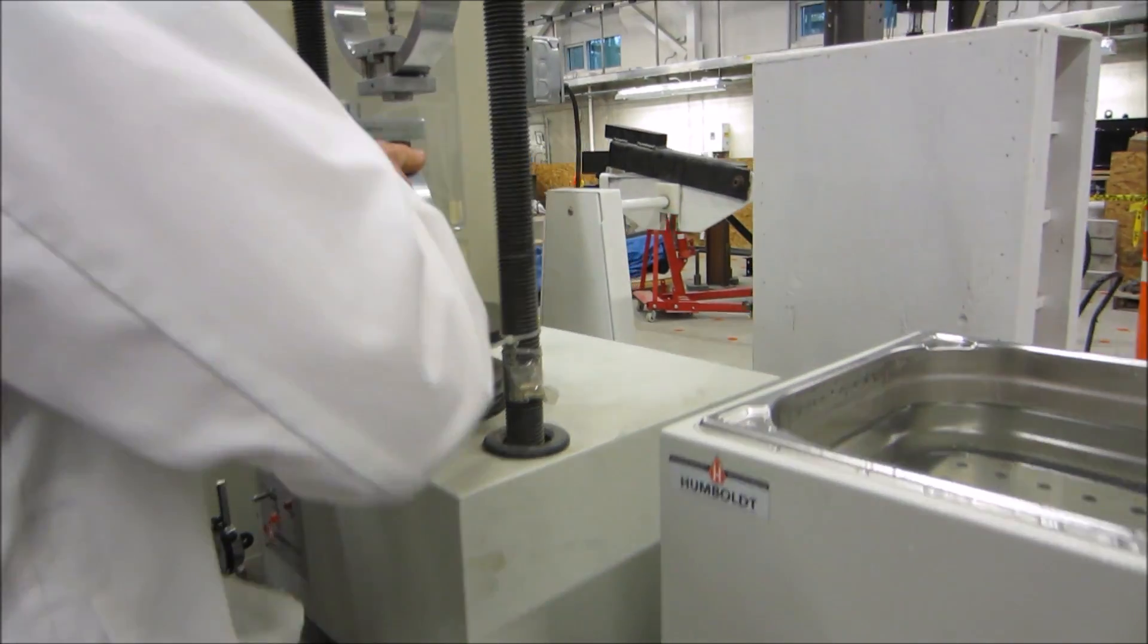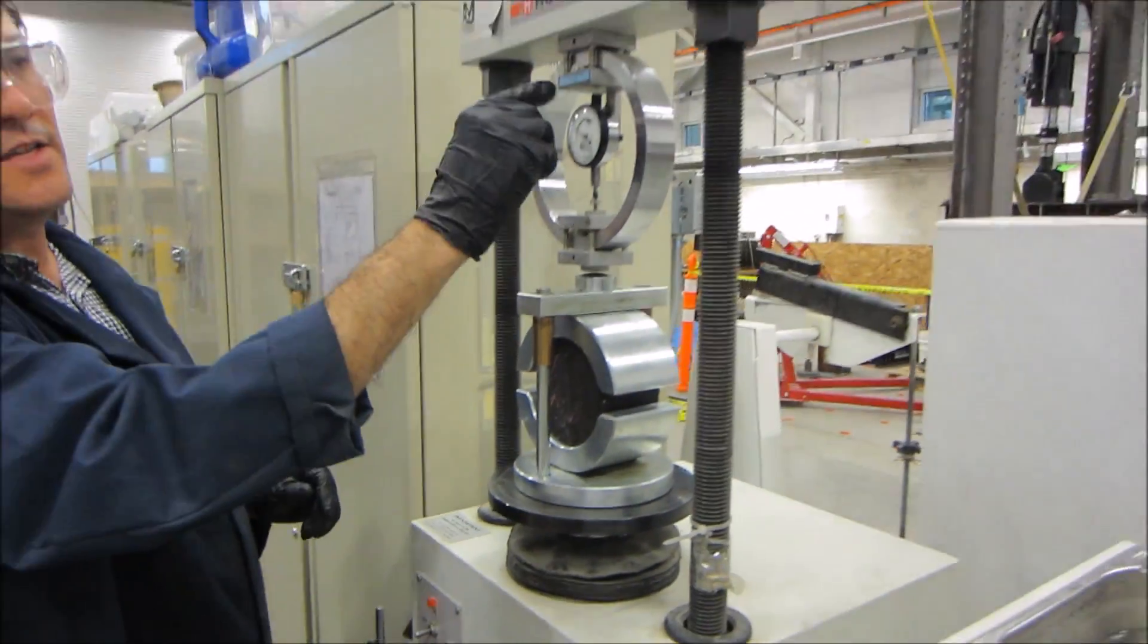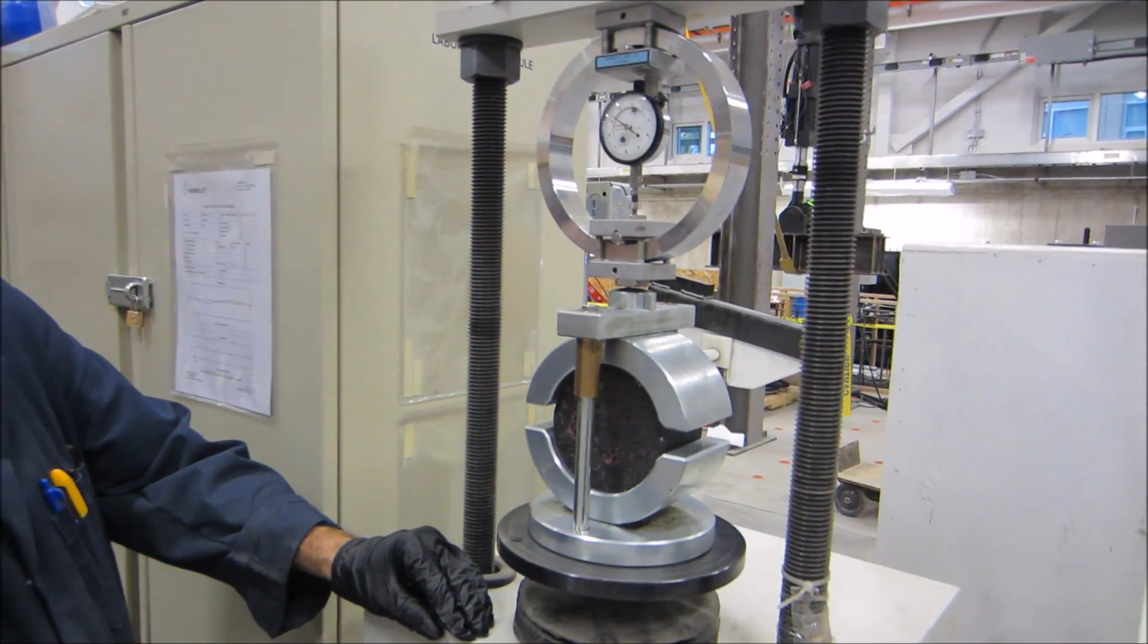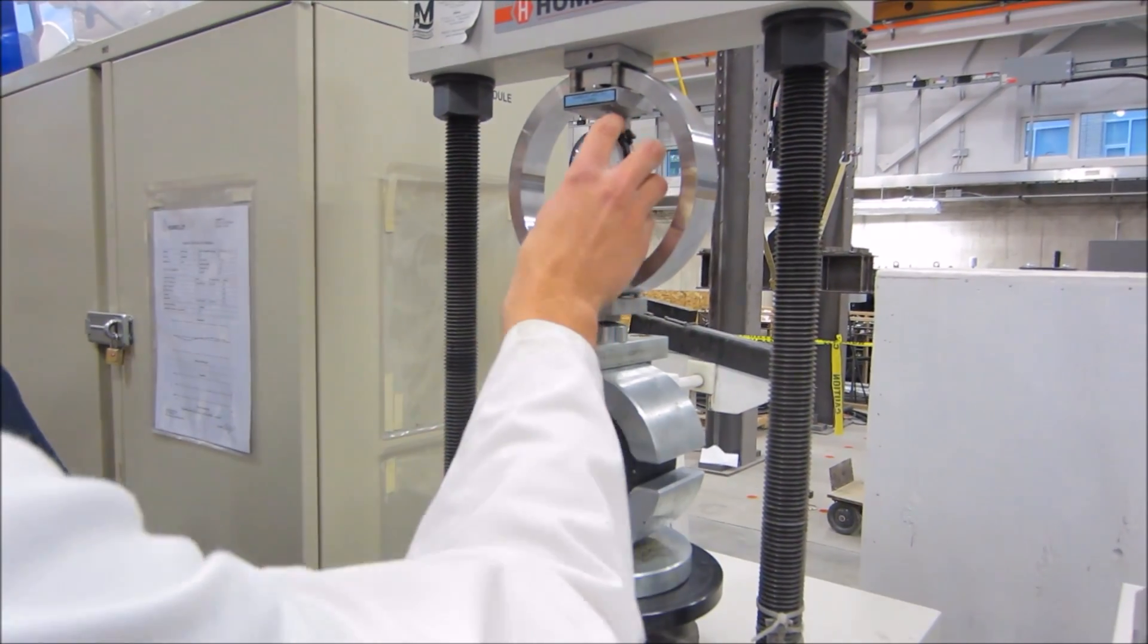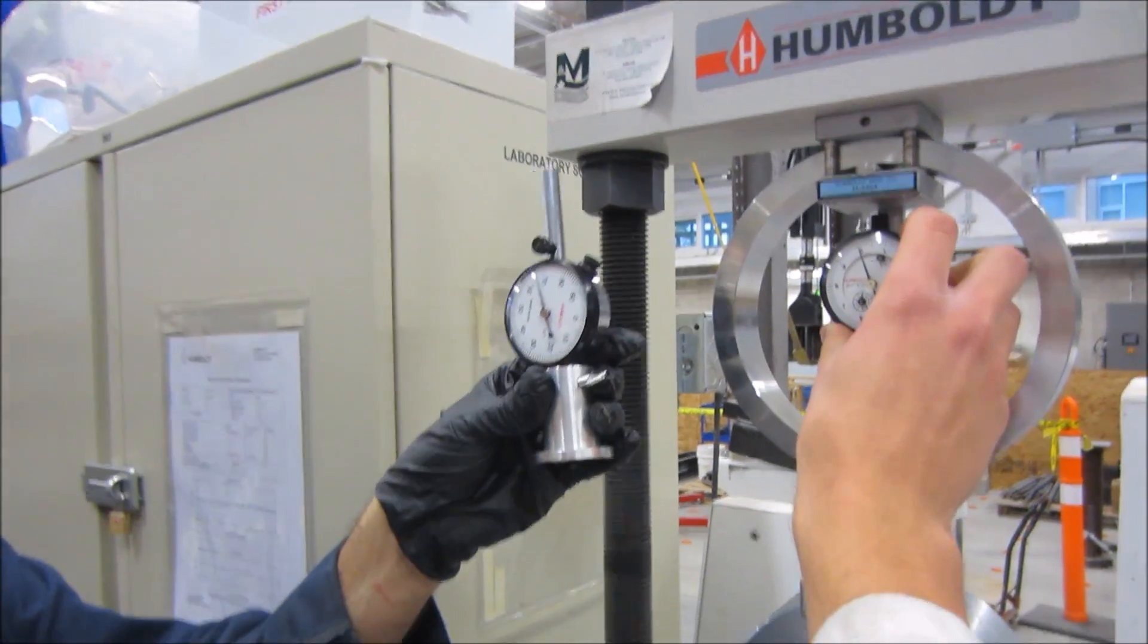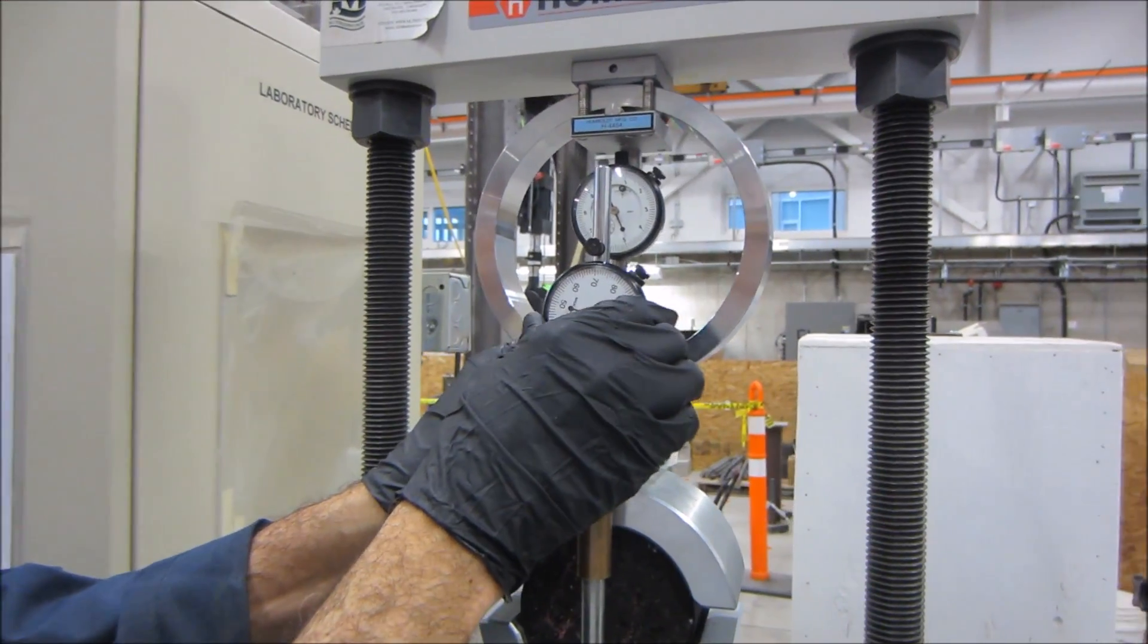Place the entire assembly into the Marshall stability machine. Raise the platform until there is a reading and set the stability gauge to 0. Install the flow gauge and set it to 0.